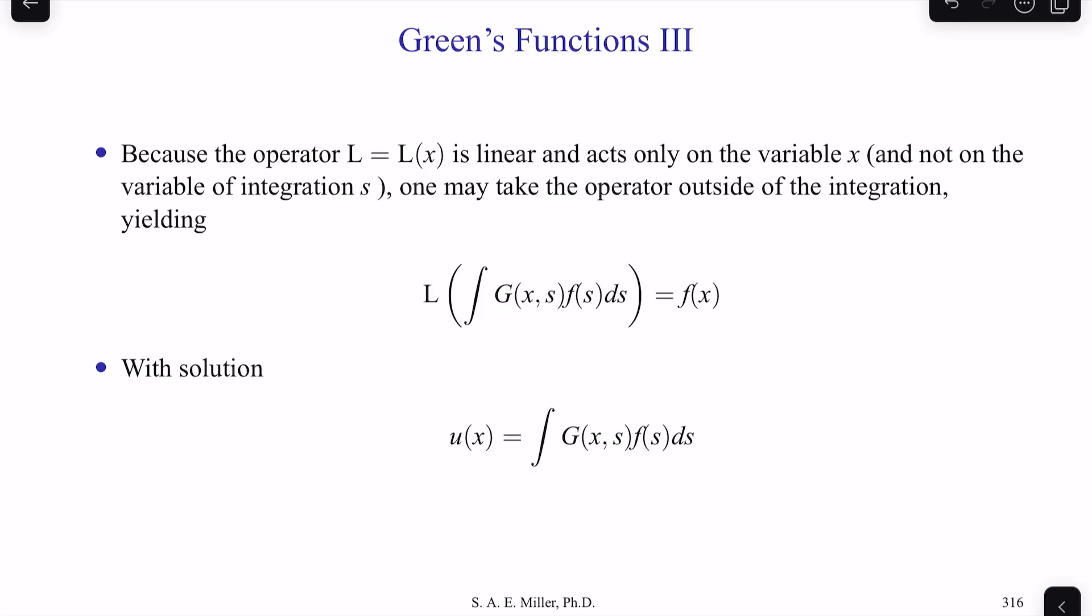Now, you can see we can directly write the solution as u of x equals the integration of G, the Green's function, x at some point s, times f of s over all s. And you see we're integrating s, so we're getting rid of the s variables, and we're left with x and only a function of x.